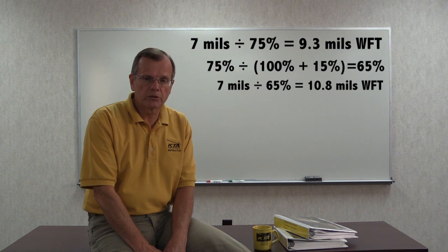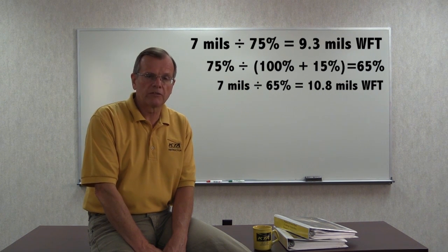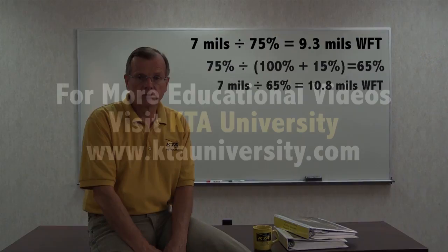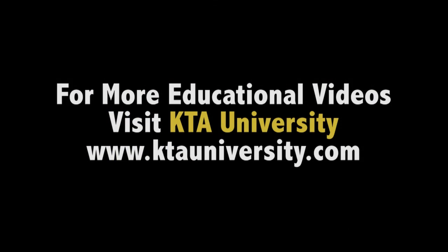In other words, without thinner, to get 7 mils dry we apply 9.3 mils wet. With thinning, we apply 10.8 mils wet. That's all there is to it. You can log on to ktauniversity.com for other instructional videos on coating application and many other subjects.